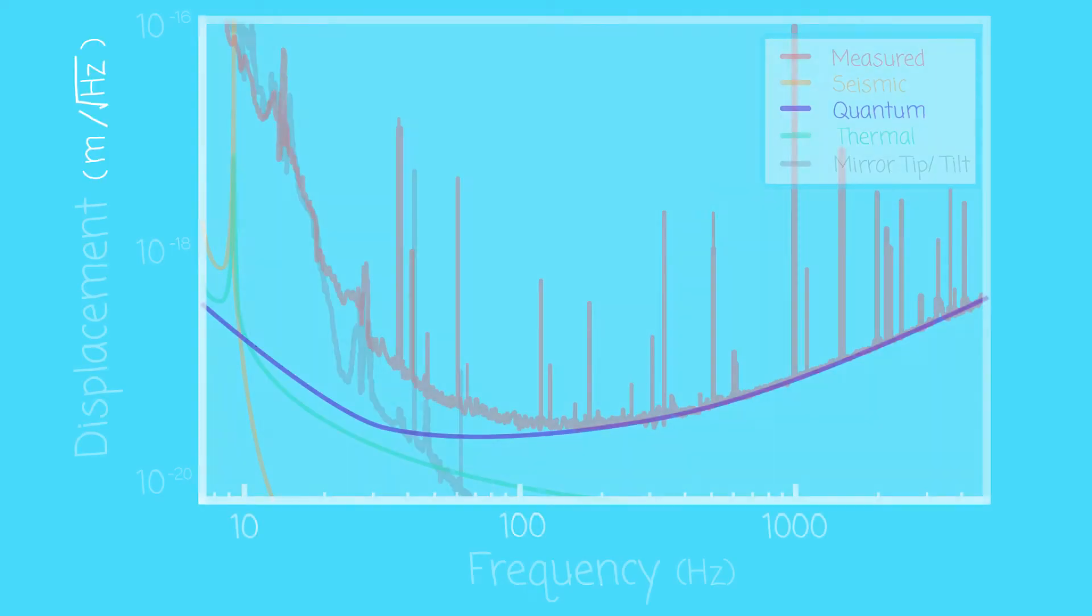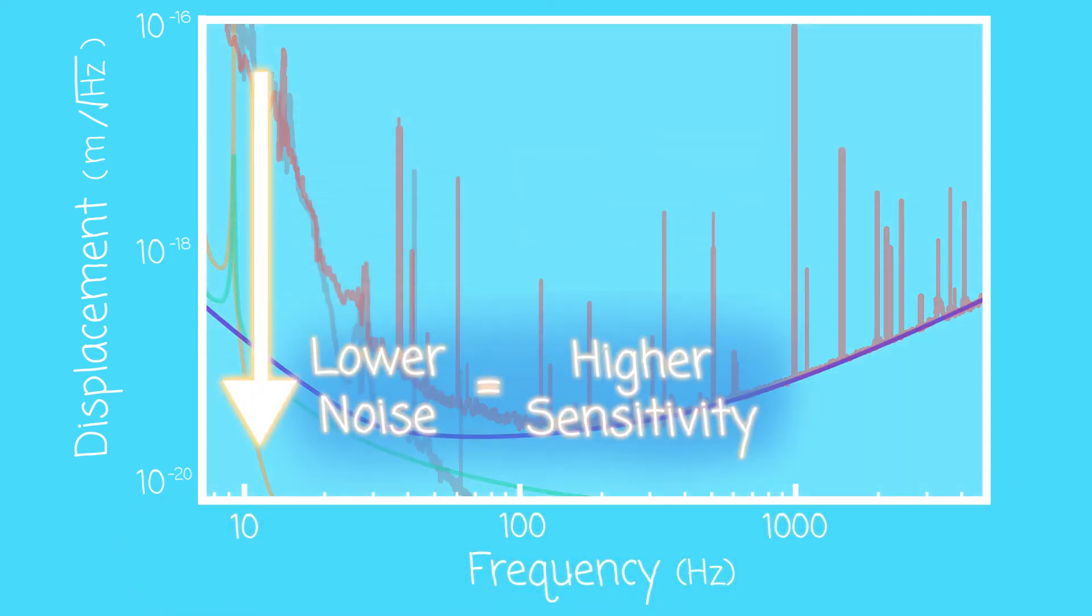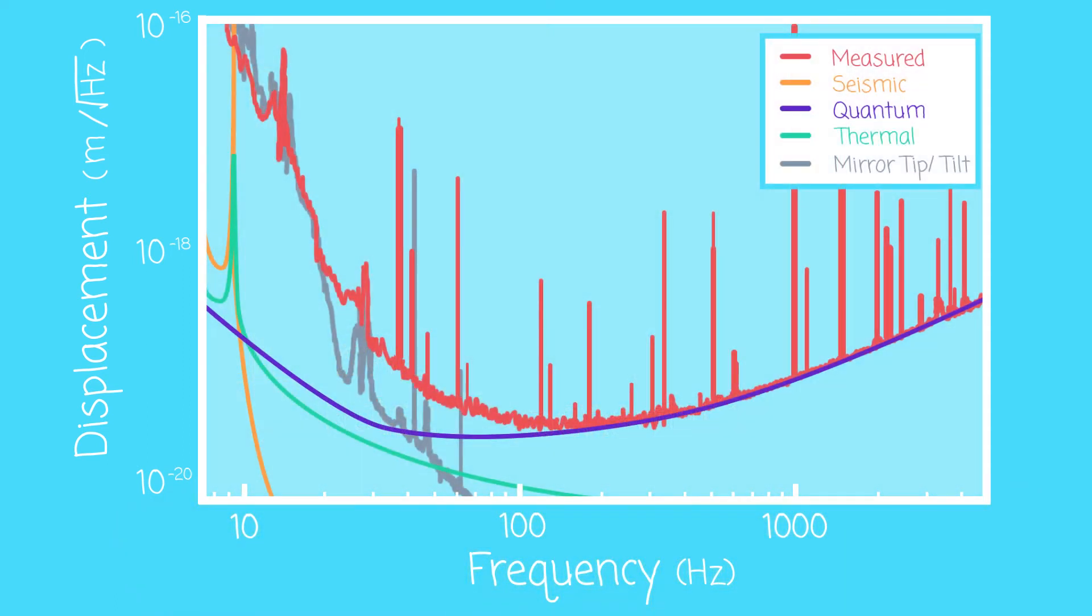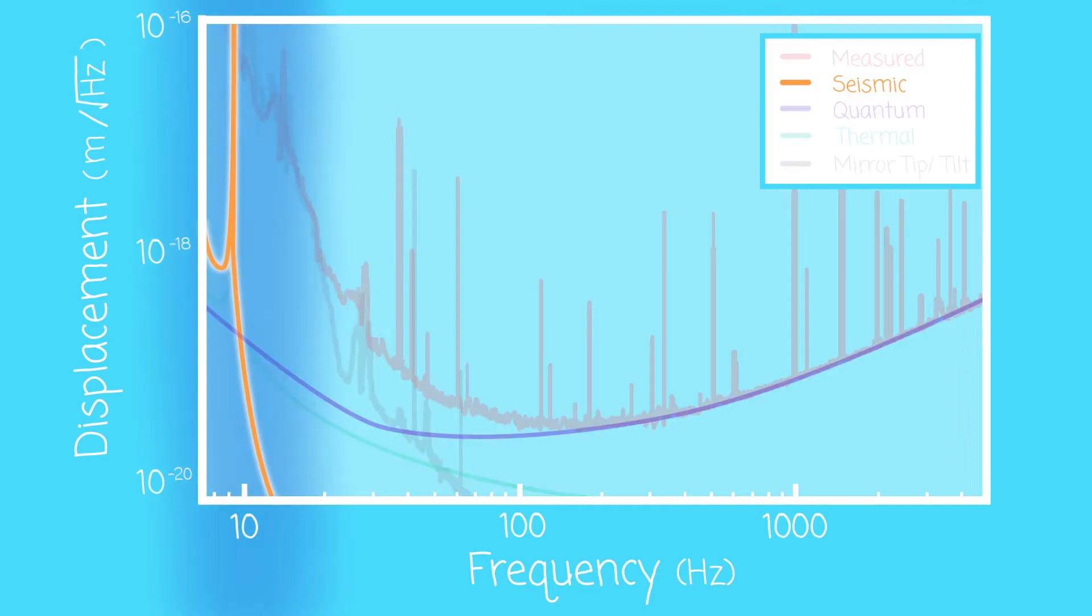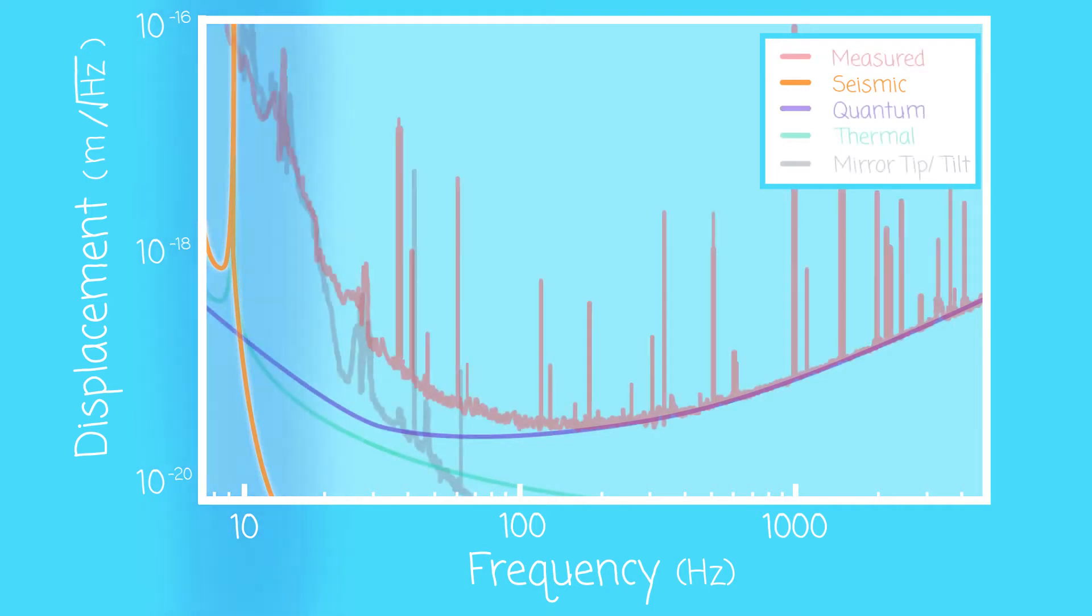We end up with the sensitivity of LIGO looking like this. The vertical axis shows the displacement of the mirrors due to various noise and the horizontal shows the frequency. The lower the noise, the higher the sensitivity. We can see that at low frequencies, displacement due to seismic oscillations dominate. The peak here is the resonance of the pendulum system. There are ongoing efforts to further reduce this low frequency noise.